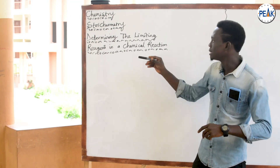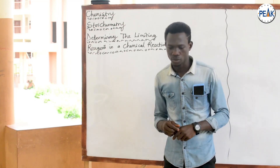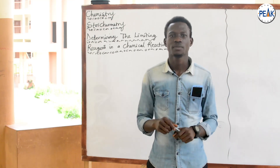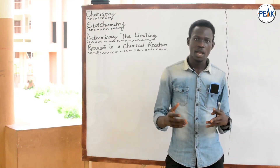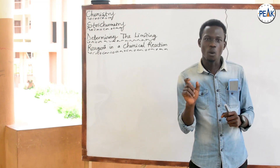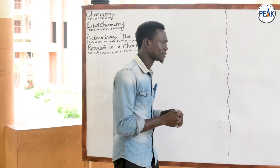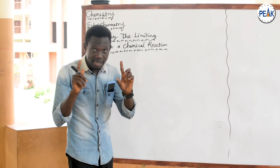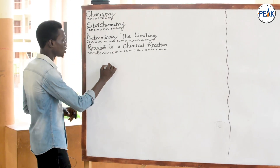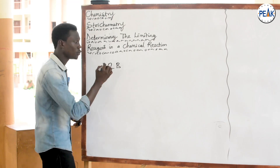What are limiting reagents? The limiting reagent in a chemical reaction is simply the reagent that is first completely used up in a chemical reaction. To illustrate this, let's make an assumption — let's say two loaves of bread,